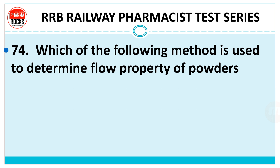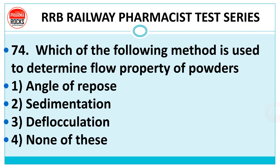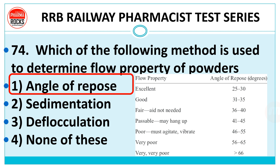Question 74: which of the following method is used to determine the flow property of powders? Options are angle of repose, sedimentation rate, deflocculation, or none of these. The right answer is angle of repose — we check flow property using angle of repose. This table is very important: flow property is excellent when the angle of repose value is 25 to 30.